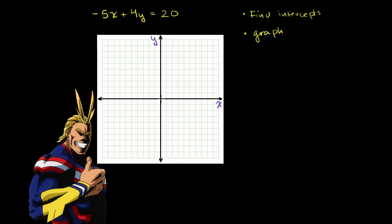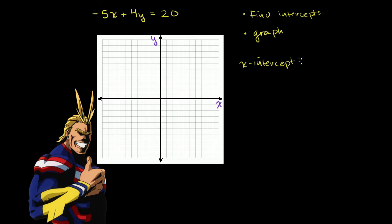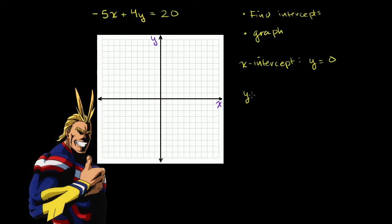Well, my y value is 0. I'm not above or below the x-axis. So the x-intercept is when y is equal to 0.